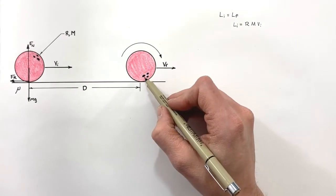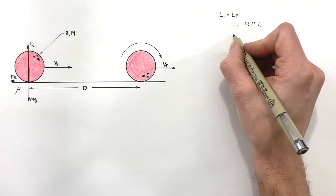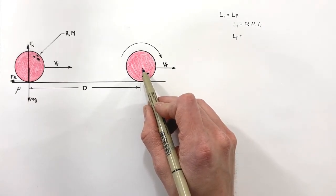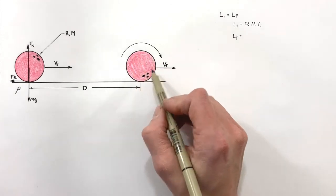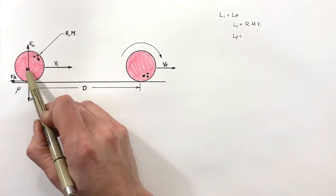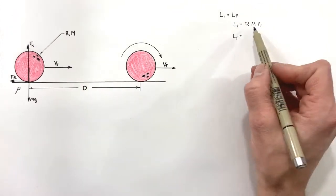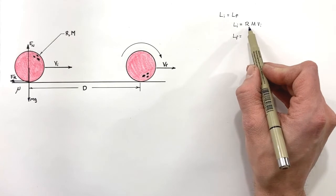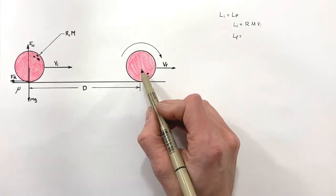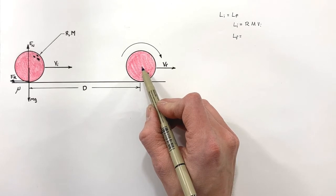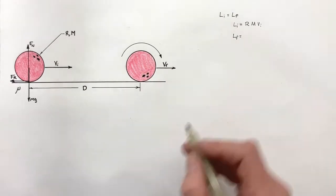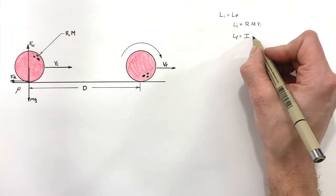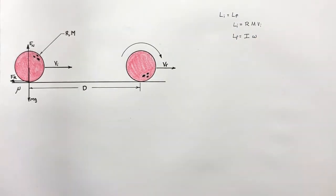Now let's look at the ball once it's rolling without slipping. We'll notice we can't treat it as though it's a particle simply moving along anymore, so we can't use the simple r·p·sinθ equation. We're going to have to look at this as dealing with some distribution of mass — meaning we need to treat this as having some final moment of inertia and some final angular velocity.